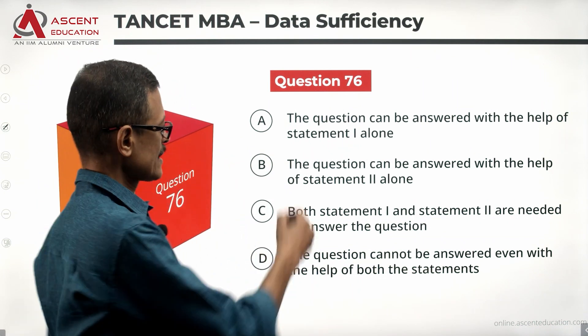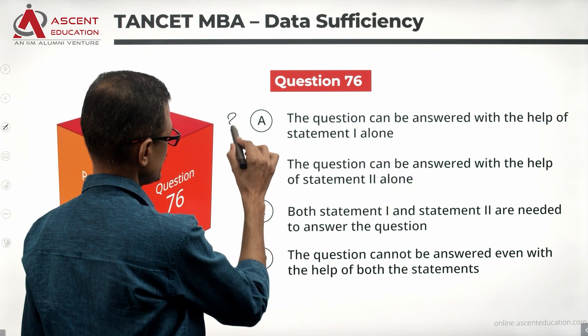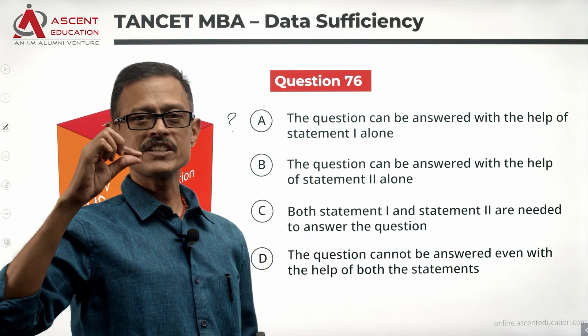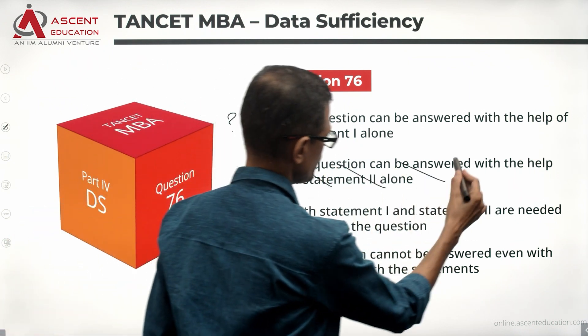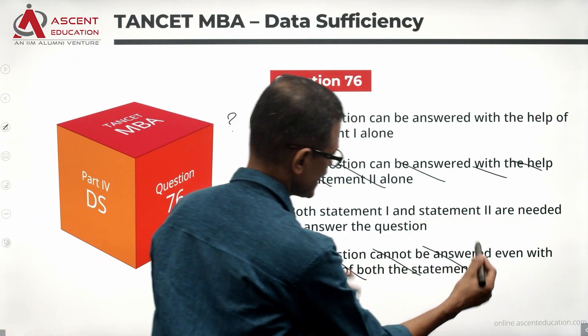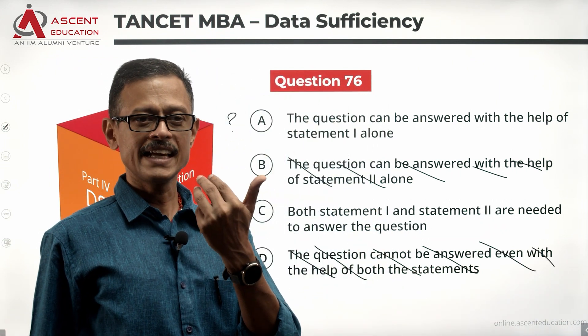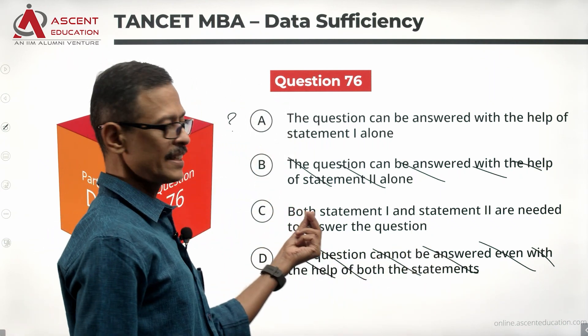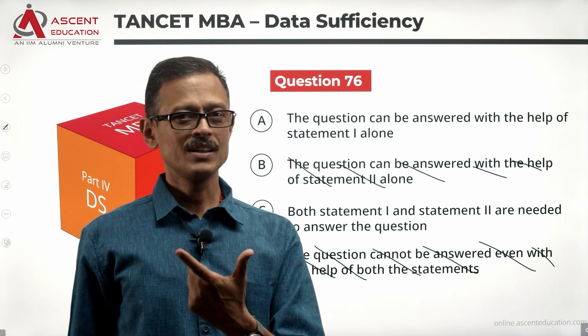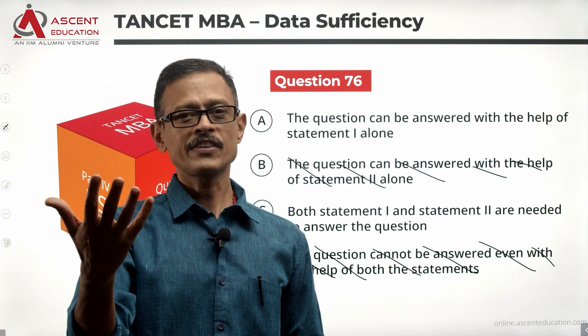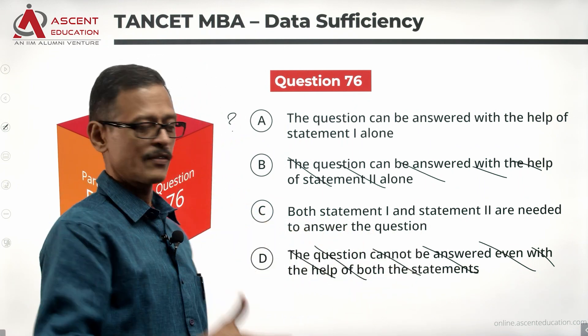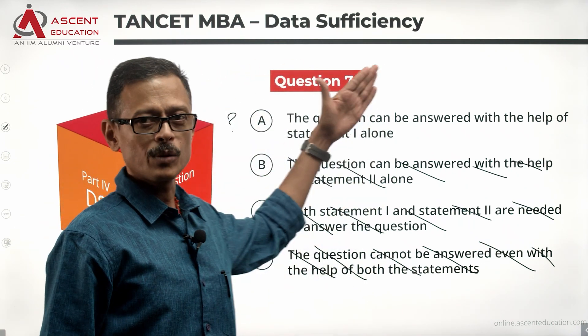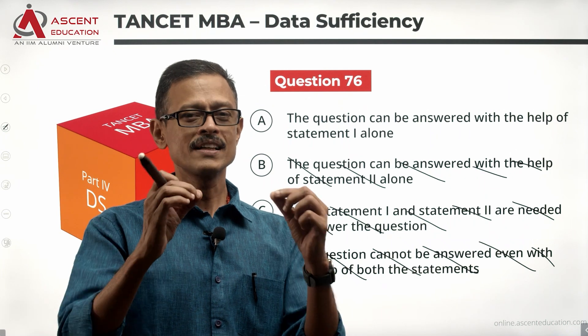So just take a minute and see answer options. Statement 1 alone is sufficient could be this. Statement 2 alone is sufficient, 1 is sufficient. So it cannot be answer option B. This is like data is not sufficient. 1 alone is sufficient. So the answer option cannot be C either. So if statement 1 alone is sufficient, the way the answer options are given in this year's question paper, answer option is A.